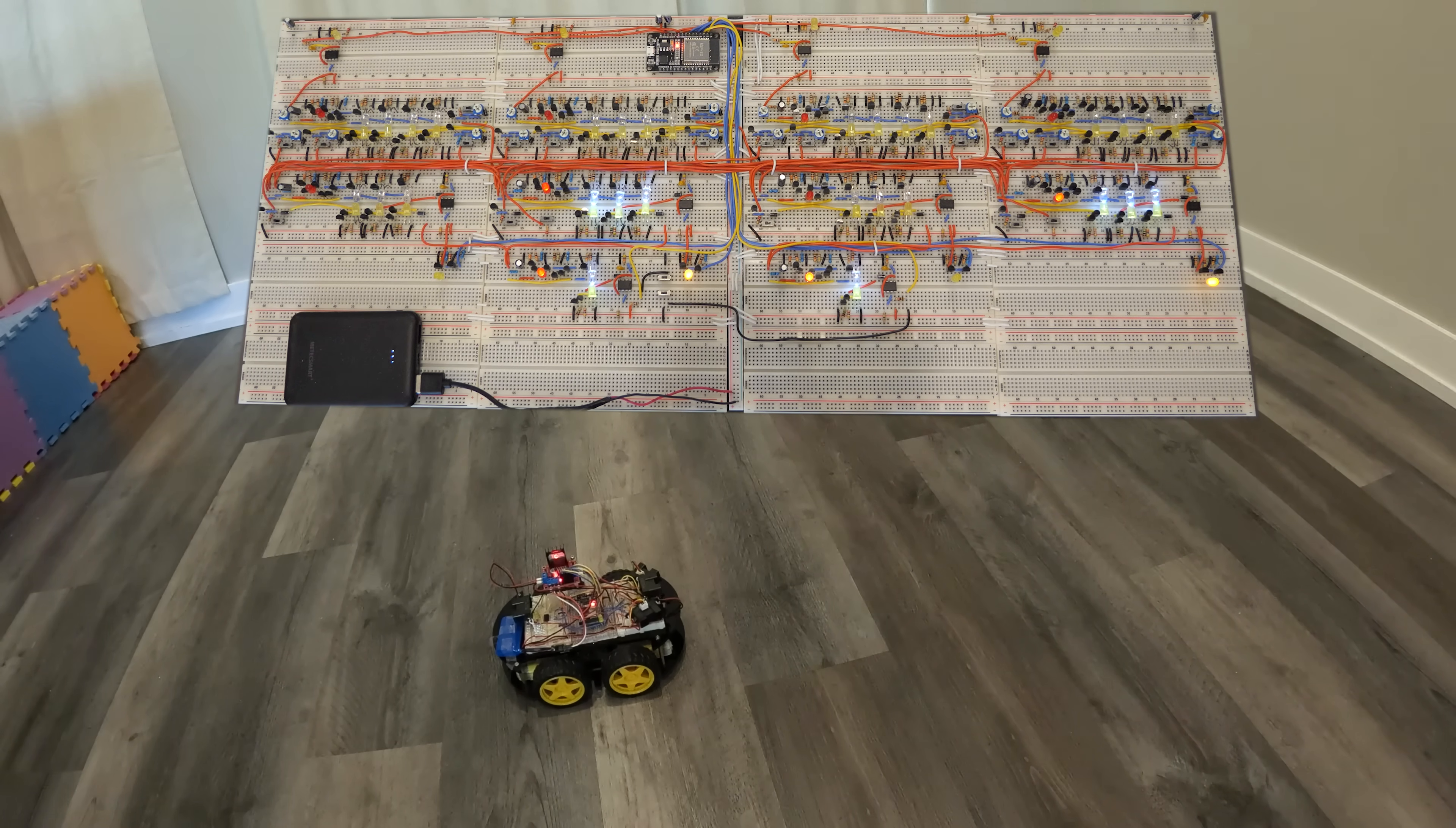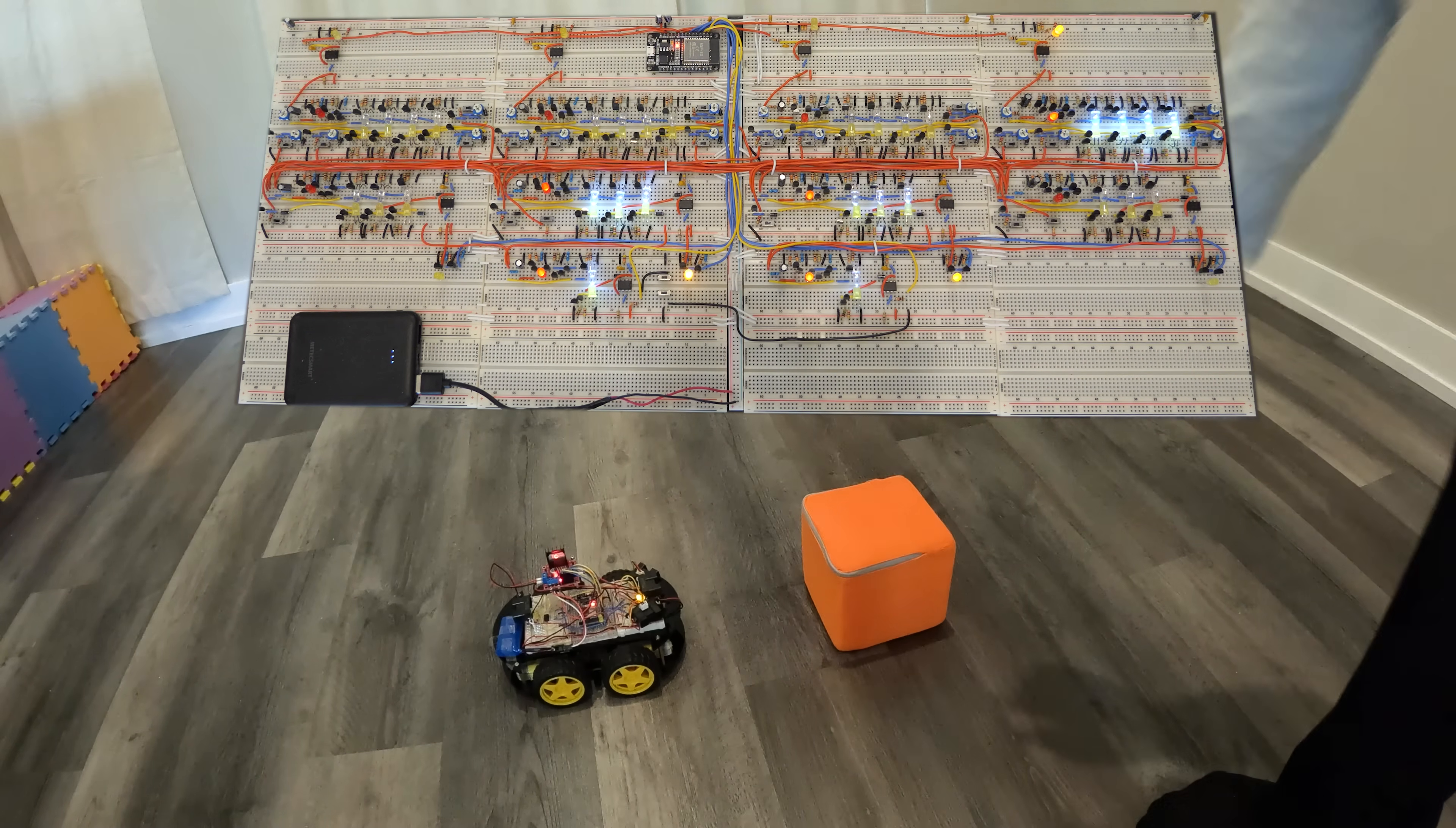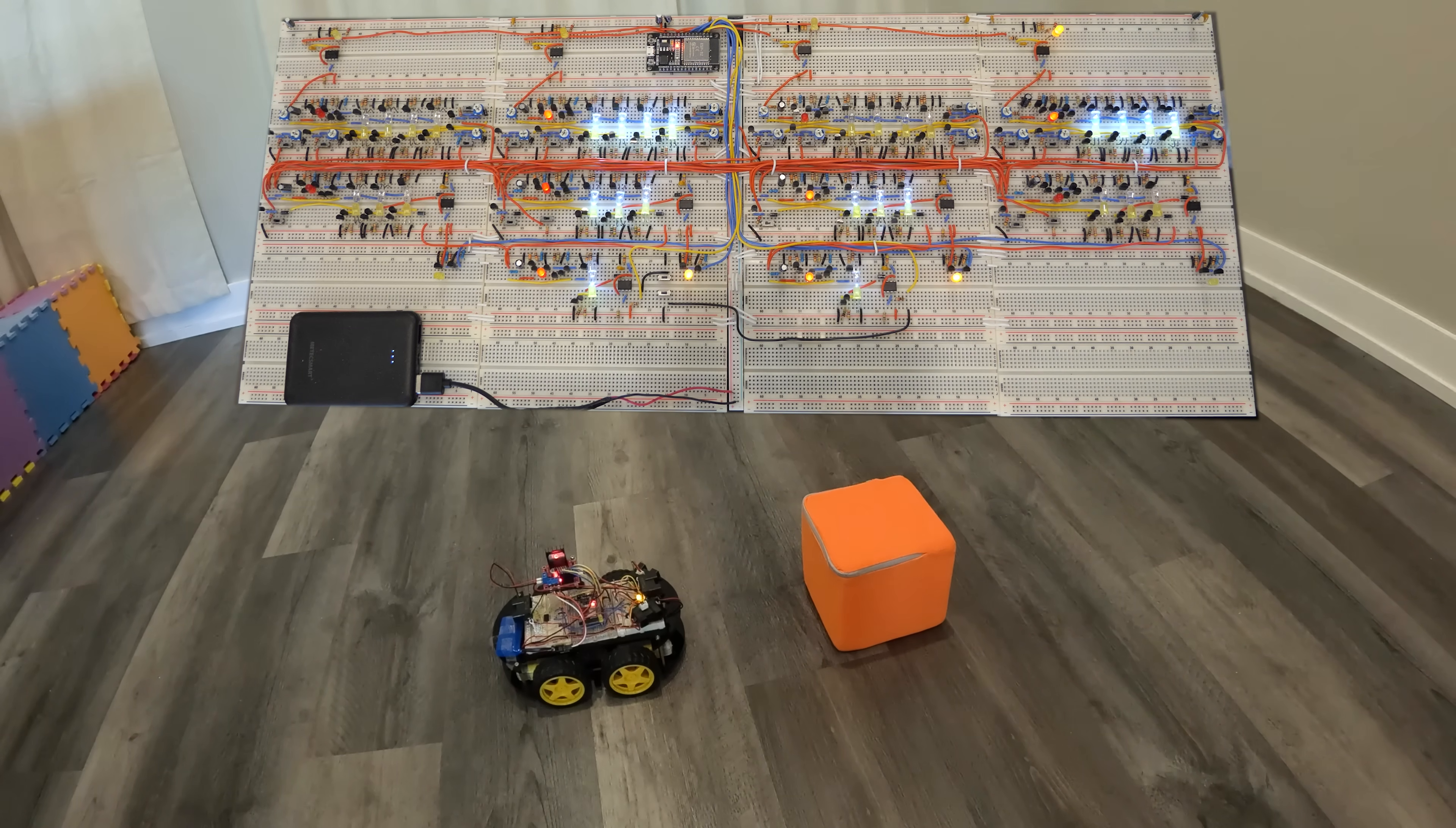Right now there's no object in front of it, so it's going right forward and left forward. If we place an object in front, we want it to turn to the right. It does this by going right reverse and left forward. So that's exactly what we want.